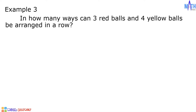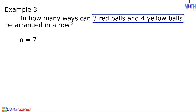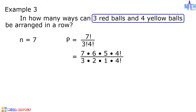Example number 3. In how many ways can 3 red balls and 4 yellow balls be arranged in a row? There are 7 balls in total, so the value of n is 7. Since there are 3 red balls and 4 yellow balls, we have 7 factorial over 3 factorial times 4 factorial, which equals 7 times 6 times 5 times 4 factorial over 3 times 2 times 1 times 4 factorial. Cancel out 4 factorial, and cancel out 6 and 3 times 2. We are left with 7 times 5, which is equal to 35.